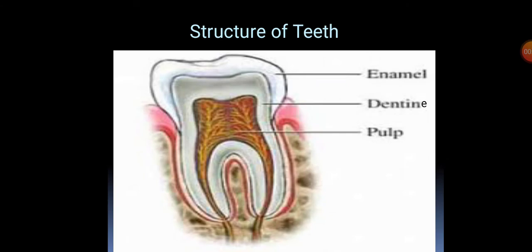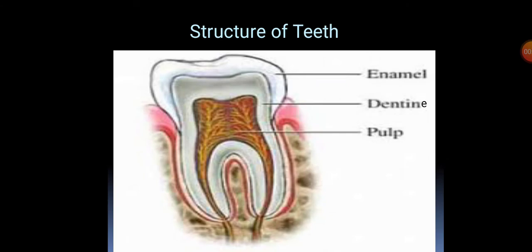Let us study first of all the structure of our teeth. The part of the teeth above the gum is called the crown, and the below part is the root. The crown is formed of dentine and has a layer of enamel outside.